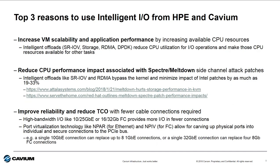So there you have it. Cavium Ethernet and Fiber Channel adapters with intelligent offloads and virtualization capability improve VM scalability and application performance, reduce the impact of the x86 patches for Spectre and Meltdown's side channel vulnerabilities, and improve reliability and lower TCO by enabling high performance with fewer cables.